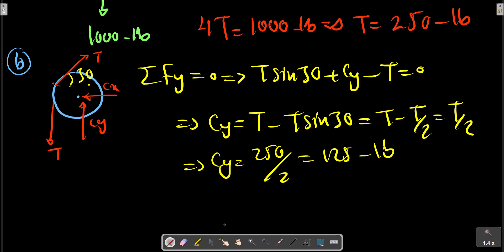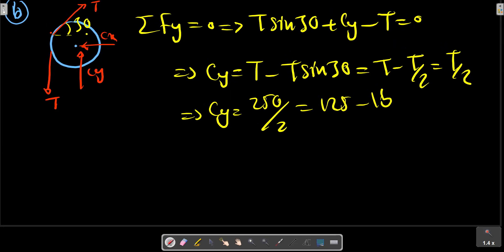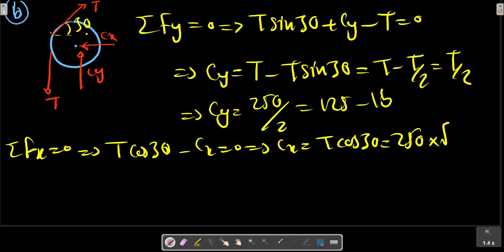In the x-direction, Fx: T cos 30 equals Cx. So Cx equals T cos 30.